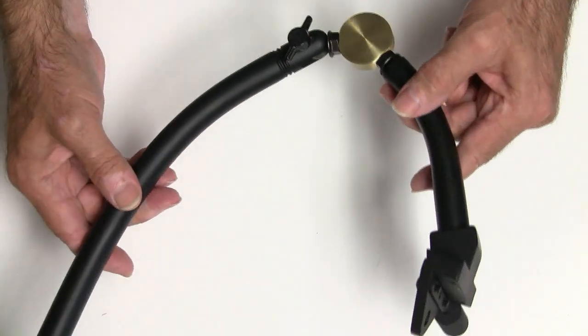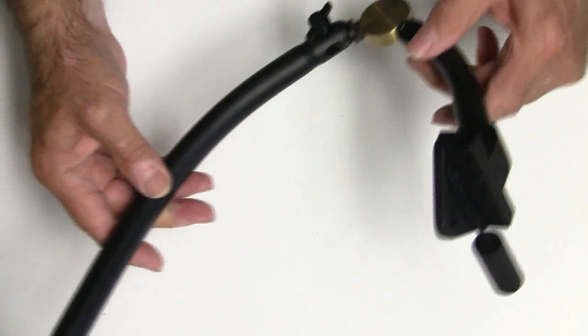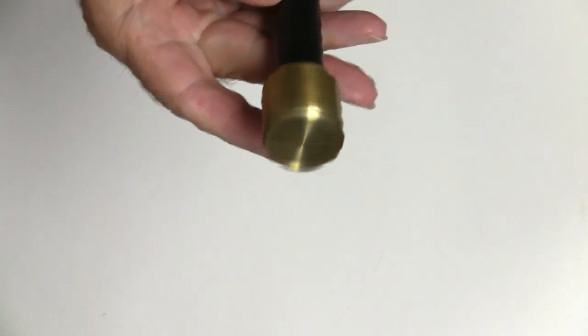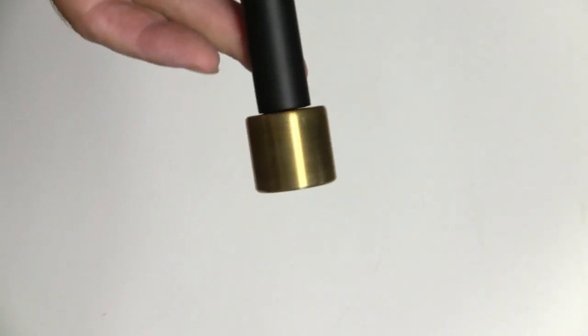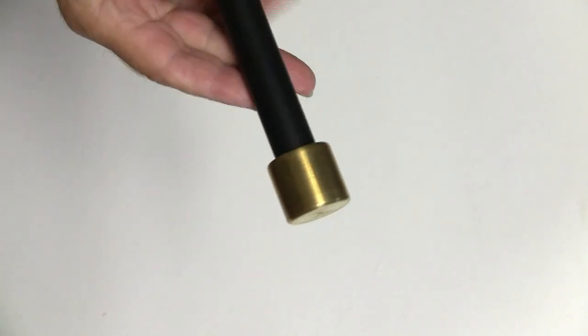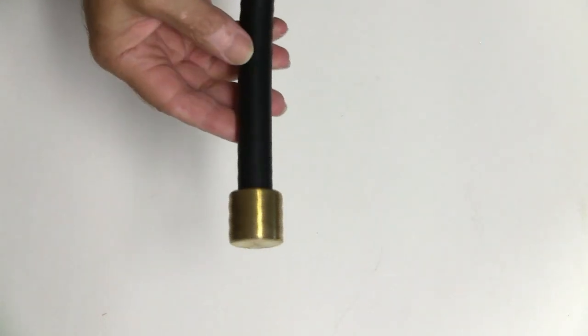For the end weight I did the same thing. I took that brass piece that I bought off of eBay and I machined it down so that it was the right weight, drilled a hole in it and tapped it. That's what I use for the end piece.